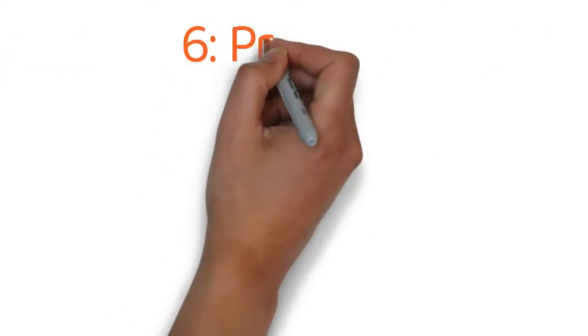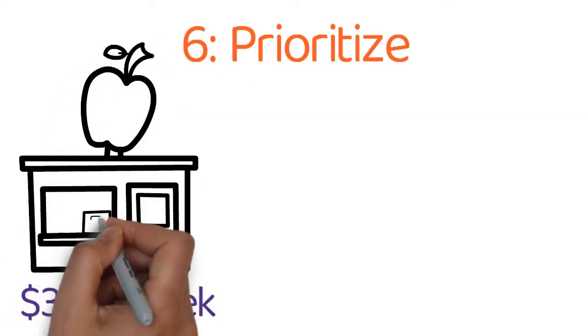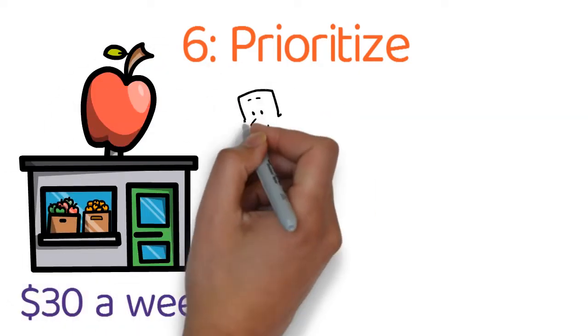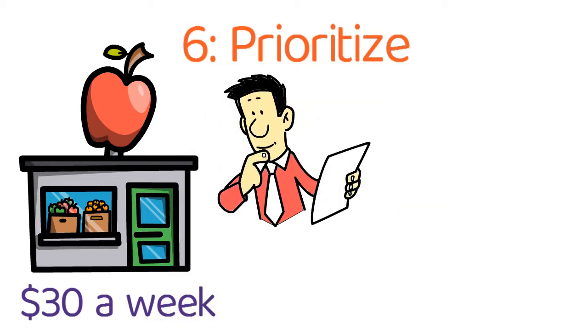Tip number six, prioritize. If you are going to try to live off of $30 a week for groceries, you have to be careful when you run out of something. You don't want to just run out to the store and buy it without thinking first. Ask yourself, is it really necessary for me to have this? If the item you're wanting isn't absolutely necessary, then don't buy it.